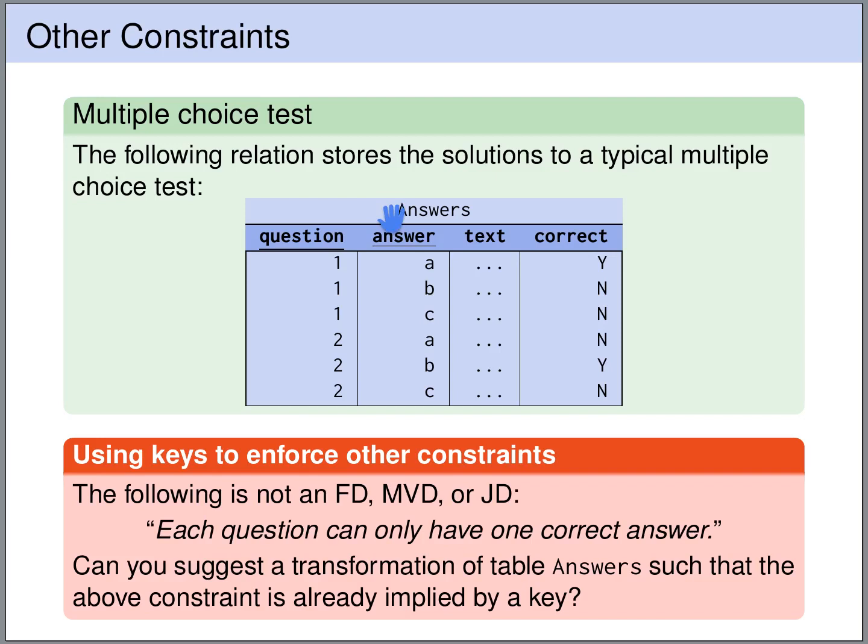Now let's assume that we want to have multiple choice tests where there can be at most one correct answer. We want to encode this constraint in a form that the database management system understands and can enforce. This constraint that every question can have only one correct answer is neither a functional dependency nor a multivalued dependency, so the question is how can we express this as a key constraint.